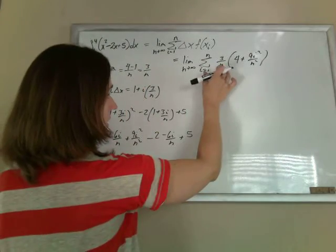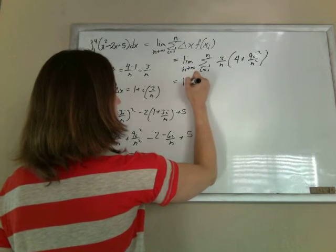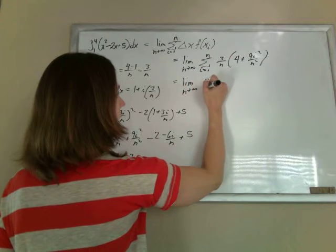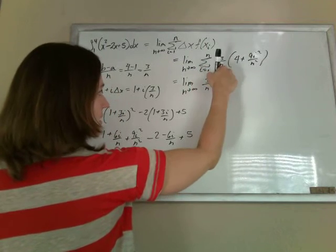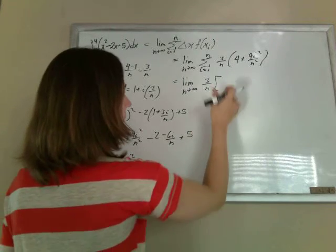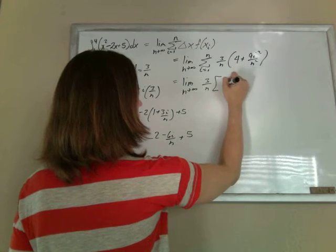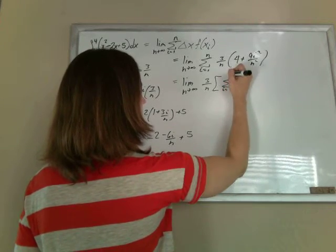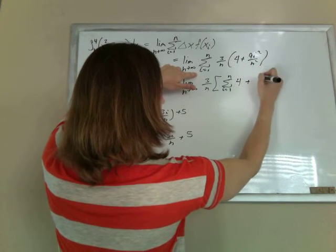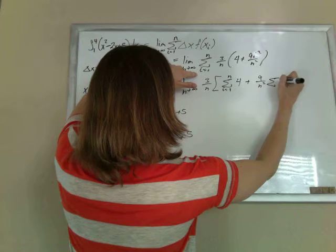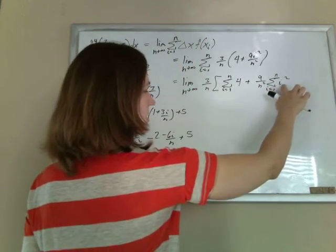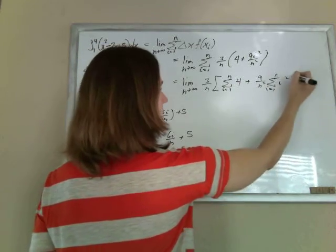Now we've got to deal with these sigmas. So I'm going to write this, I'm going to sort of just manipulate it. I'm going to pull the 3 over n out to the front, because it's constant with respect to the sigma. The only thing that's changing is the i, so it's legal. Then I'm going to break the sigma up into, because we have nice properties, we can do what we think we can do. 4 plus, pull out the 9 over n squared, because the only thing that's changing with respect to the sigma is the i squared, so any constant can be pulled out.